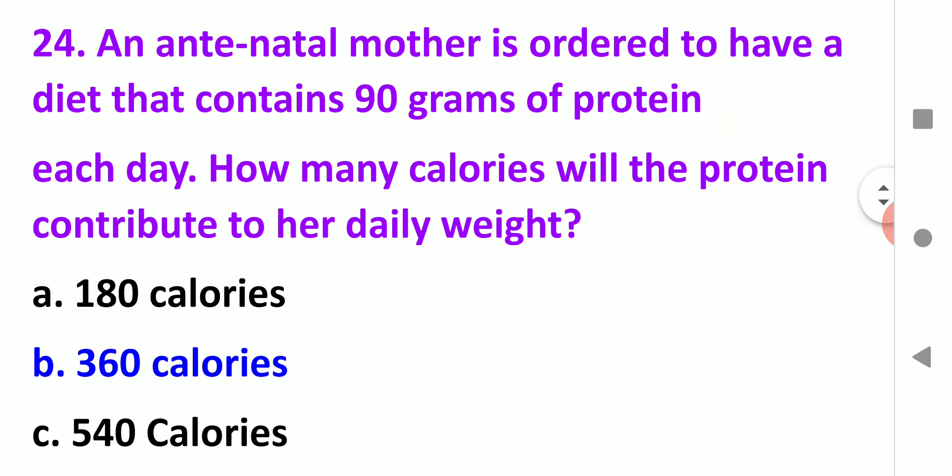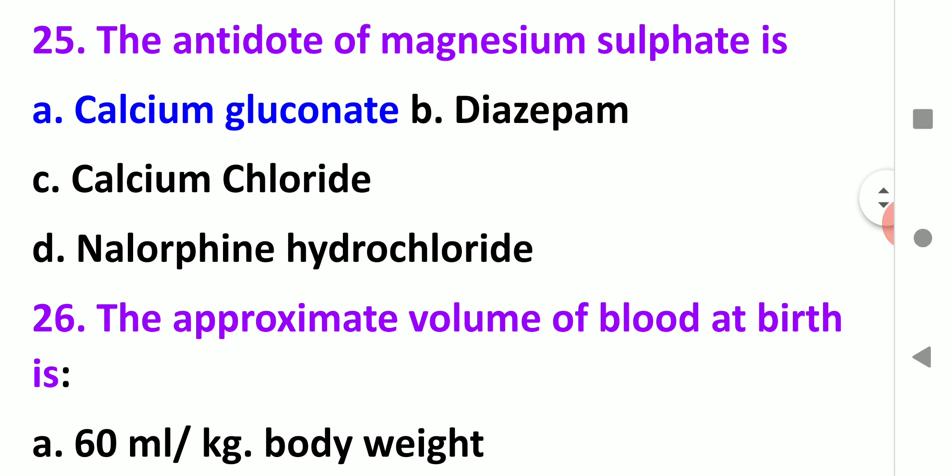An antenatal mother is ordered to have a diet that contains 90 grams of protein each day. How many calories will contribute to her daily weight? You should know that 1 gram of protein is 4 kilocalories. So 90 grams of protein times 4 equals 360 kilocalories.